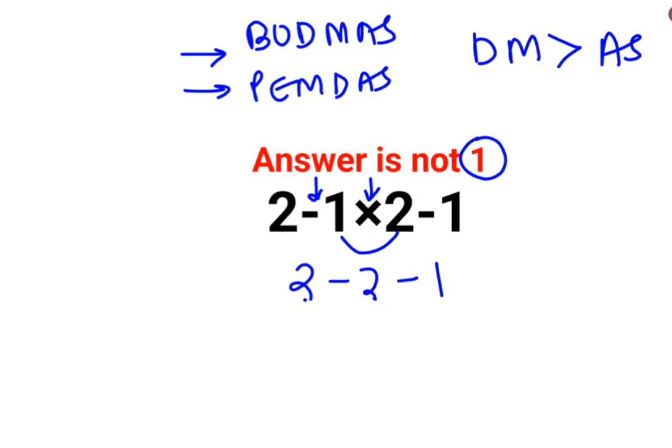what we can do is 2 minus 1, 2 minus 2 is 0, minus 1. So the answer for this question is, when you take 0 from 1, the answer is 1.